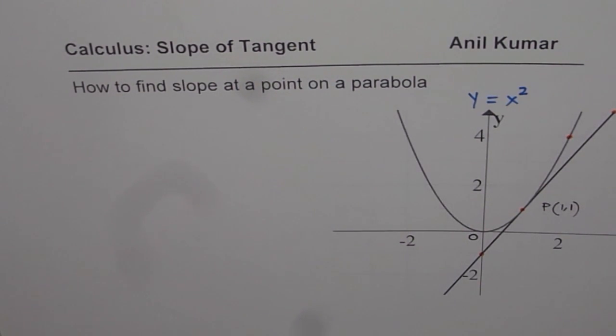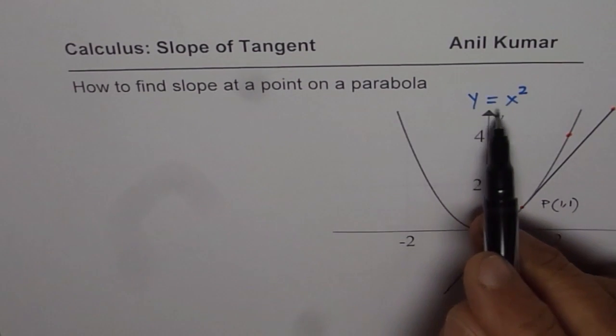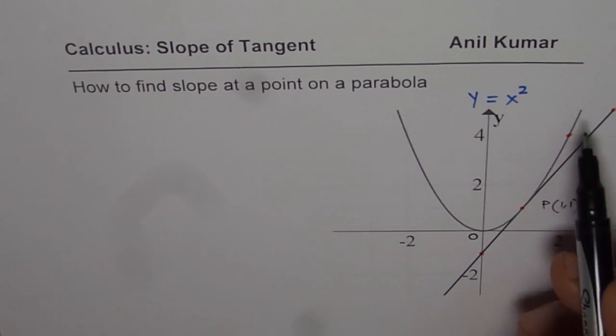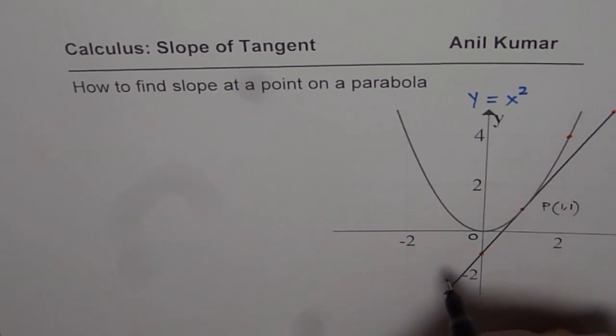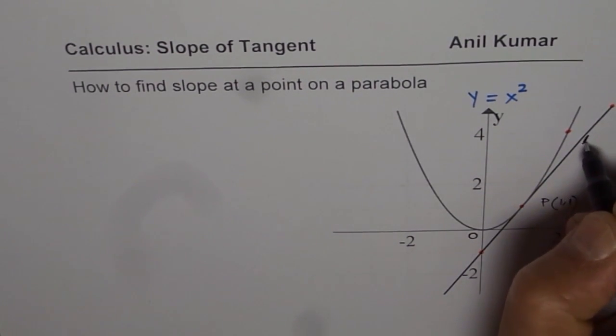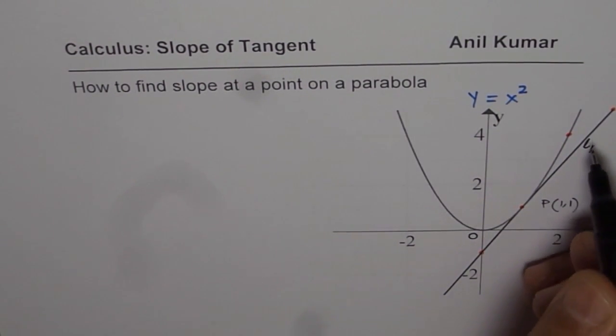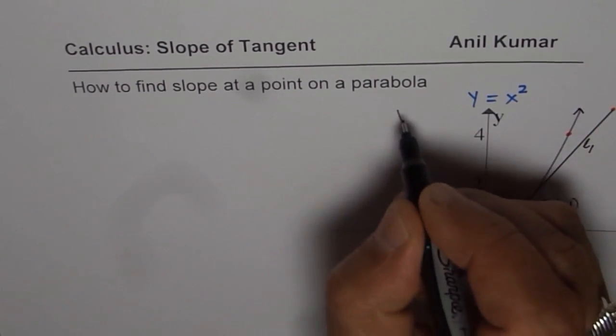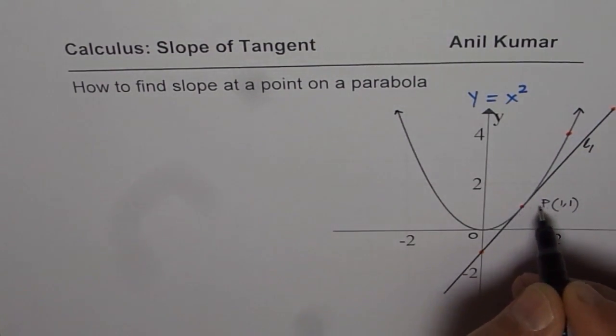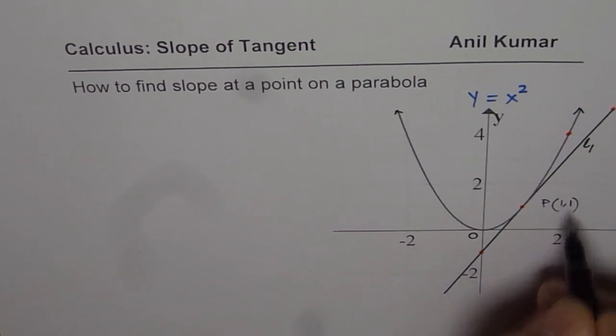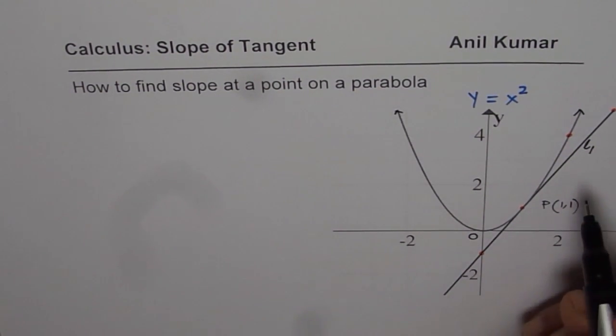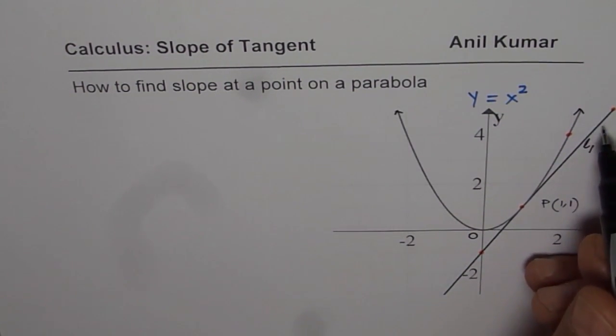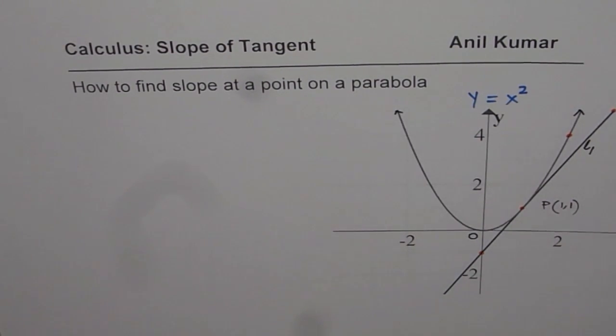To keep it simple we have taken up y equals to x square as a parabola as shown here. And we have shown a tangent line, let me call this as line L1, which is tangent to the curve y equals to x square at a point P, which is (1, 1). You need to find slope of this tangent line, so that is the question.